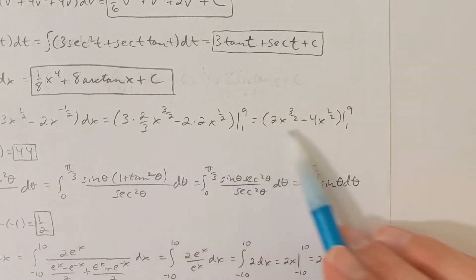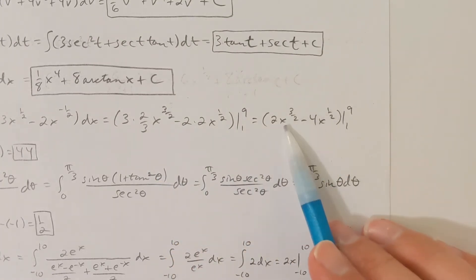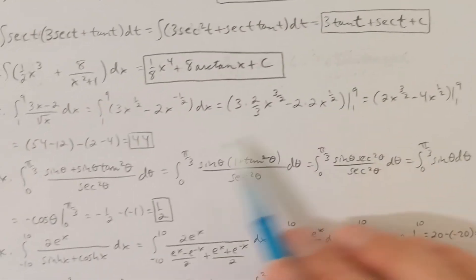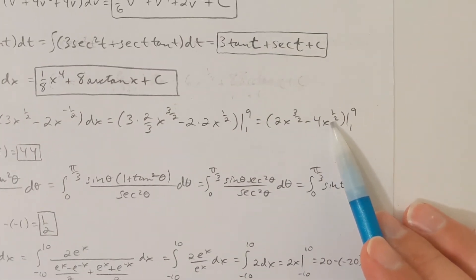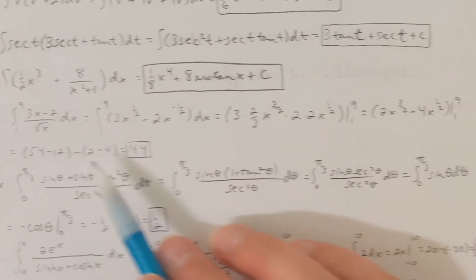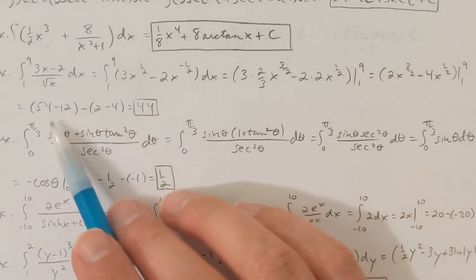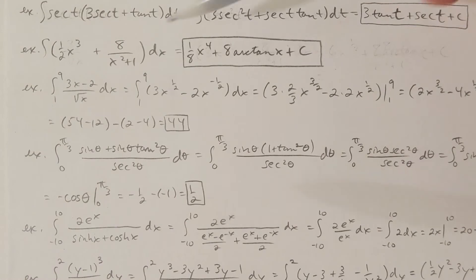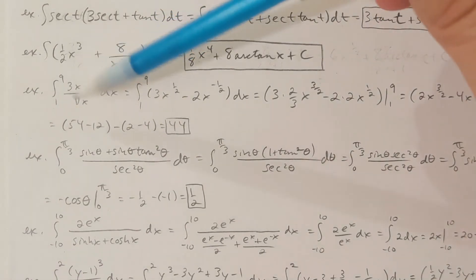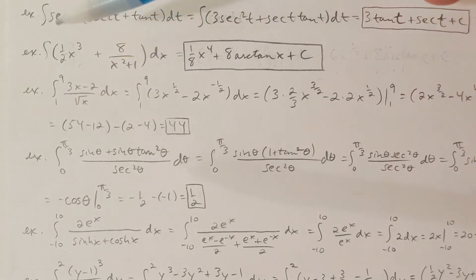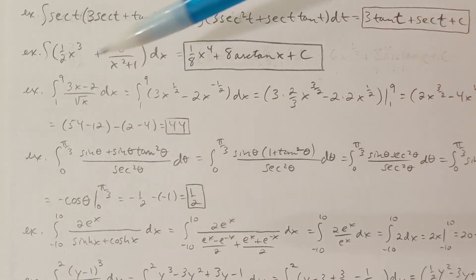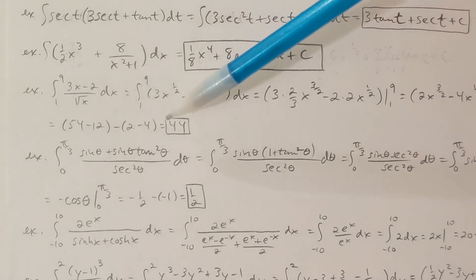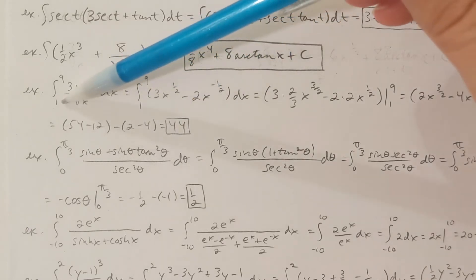The 3's cancel. Plugging in the bounds: 9 to the 1/2 is 3, 3 cubed is 27 times 2 is 54. Minus 9 to the 1/2 is 3 times 4 is 12. Minus the quantity when I plug in 1: 2 minus 4 is negative 2. So 54 minus 12 plus 2 is 44. If I were to look at the graph on the interval 1 to 9, the curve is completely above the x-axis, so this answer represents the area under the curve above the x-axis between 1 and 9.